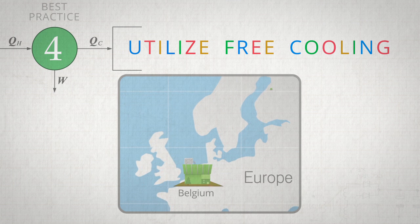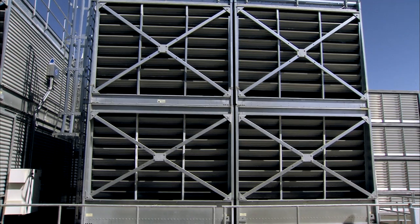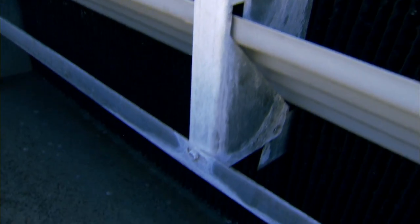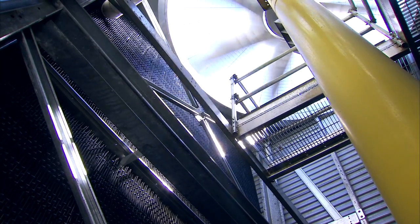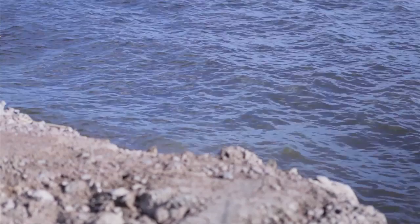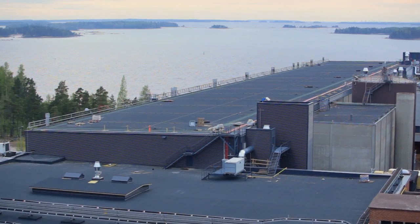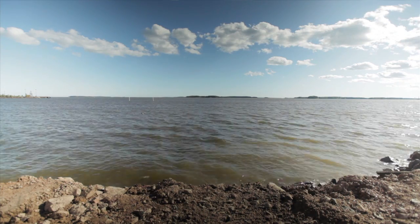In Europe, we have two data centers that have no chillers whatsoever. We're able to take advantage of local constraints and conditions. In Belgium, we use evaporative towers without any chillers given the ambient conditions. In Finland, we use seawater cooling. Seawater from the Bay of Finland cools the servers, and then we temper the water returning to the Bay of Finland so there are no temperature gradients returning to the Bay.